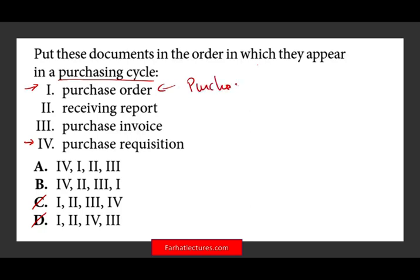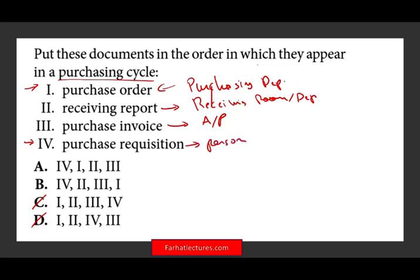You also have to know which department is doing what. The purchasing department handles the purchase order. The receiving room or department prepares the receiving report. The purchase invoice usually goes to accounts payable to update the record. The purchase requisition is prepared by whoever is requesting the item. So once you know the purchase order comes next, A is the answer — then you receive it, then they invoice you. Therefore the answer is A.